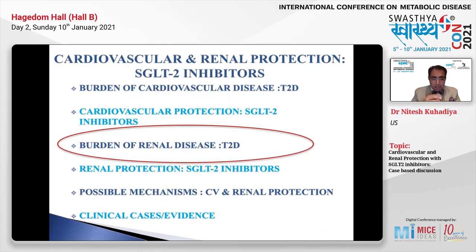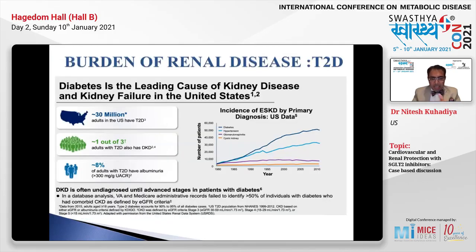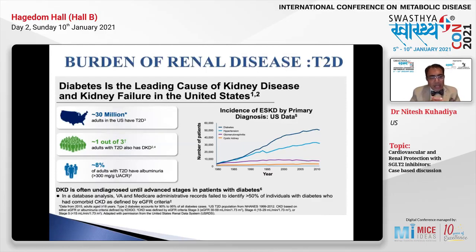Now let's switch gears and talk about the burden of renal disease in type 2 diabetes. Diabetes is the leading cause of end-stage kidney disease. Every third patient with type 2 diabetes has chronic kidney disease, and 8% of these adults also have albuminuria defined as a spot urine albumin-creatinine ratio over 300.